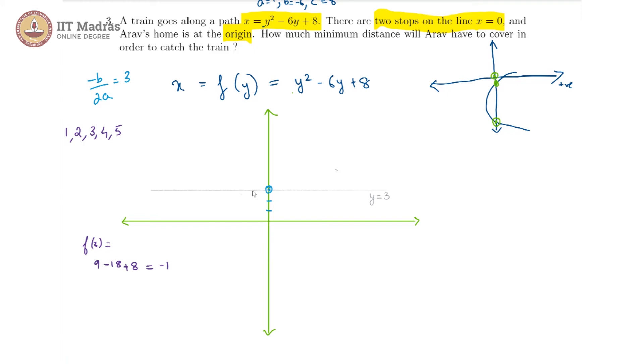x is equal to minus 1 which is going to be somewhere around here, this is our vertex and f of 2 will be equal to f of 4 because of symmetry.